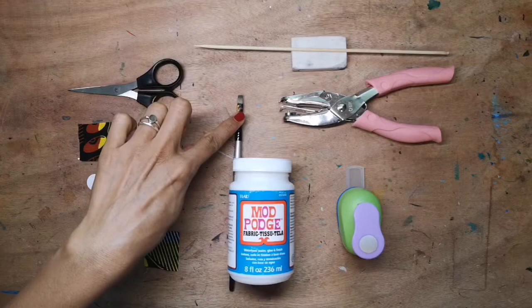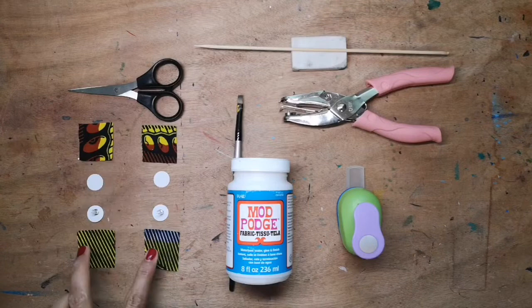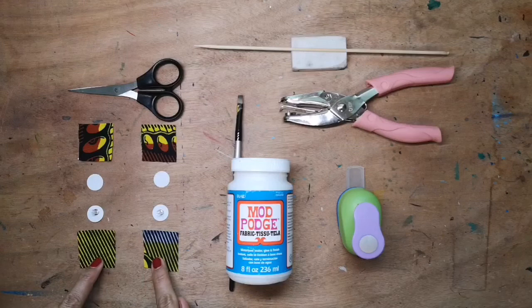You'll need sharp scissors to cut your fabric. For your fabric you'll need two little front squares and two little back squares. The front squares are the ones that you will see when you wear your earrings.